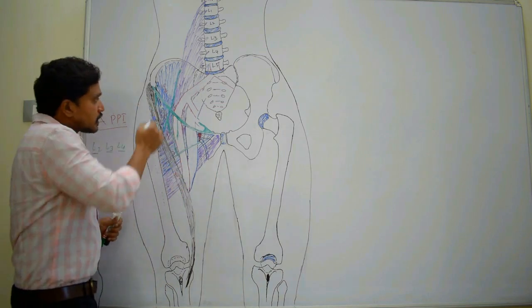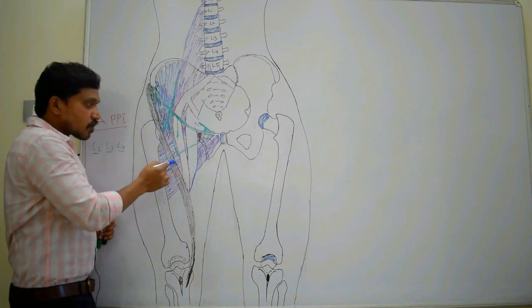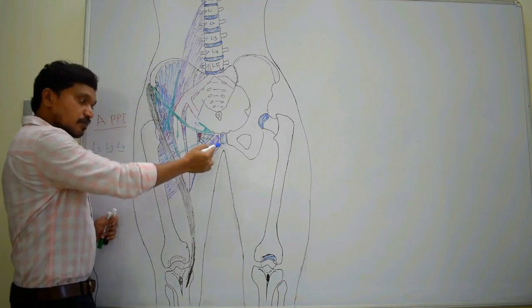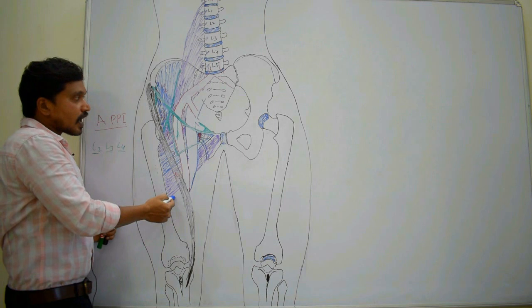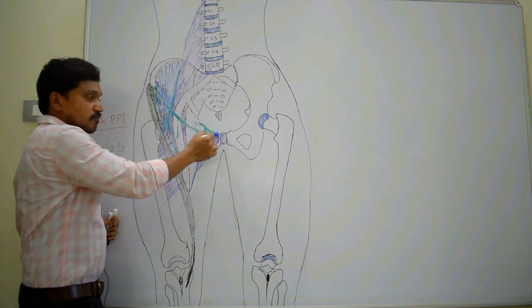It is bounded laterally by medial border of sartorius, medially by medial border of adductor longus, and base is formed by inguinal ligament.